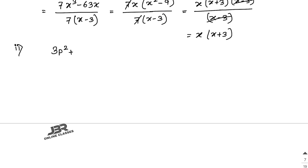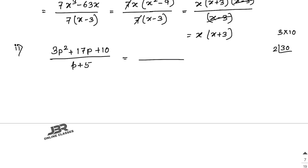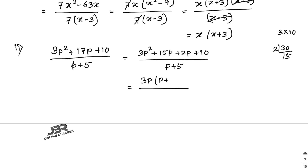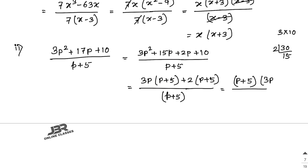Sum number 3, part 2: (3p² − 17p + 10) divided by (p + 5). Apply the middle term factorization method: 3 × 10 = 30, and 30 = 15 × 2, with 15 + 2 = 17. Rewrite as 3p² − 15p − 2p + 10 over (p + 5). Factor: 3p(p − 5) − 2(p − 5). Wait — grouping gives (p + 5)(3p + 2) over (p + 5). The (p + 5) cancels, so the answer is 3p + 2.